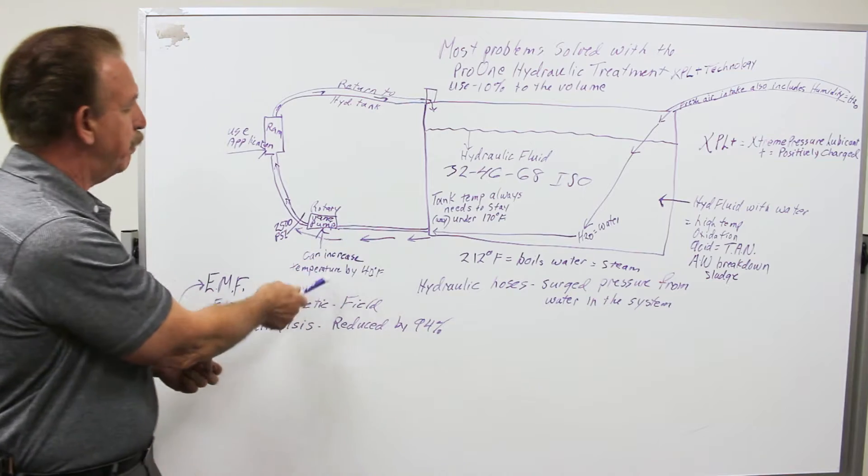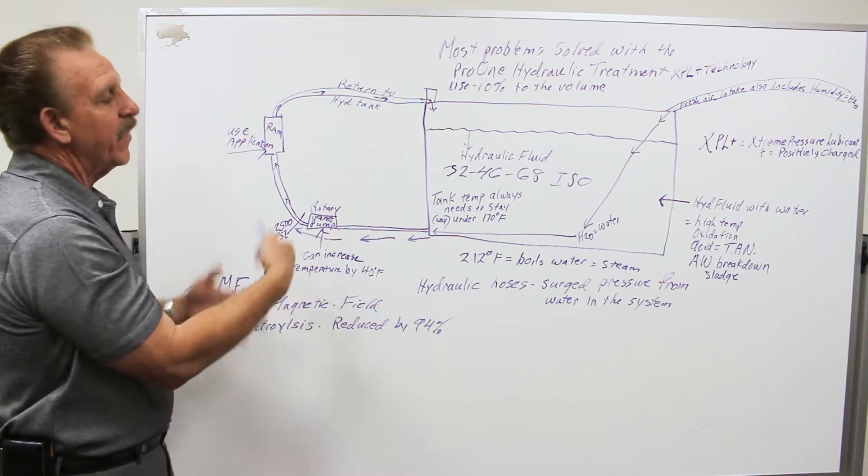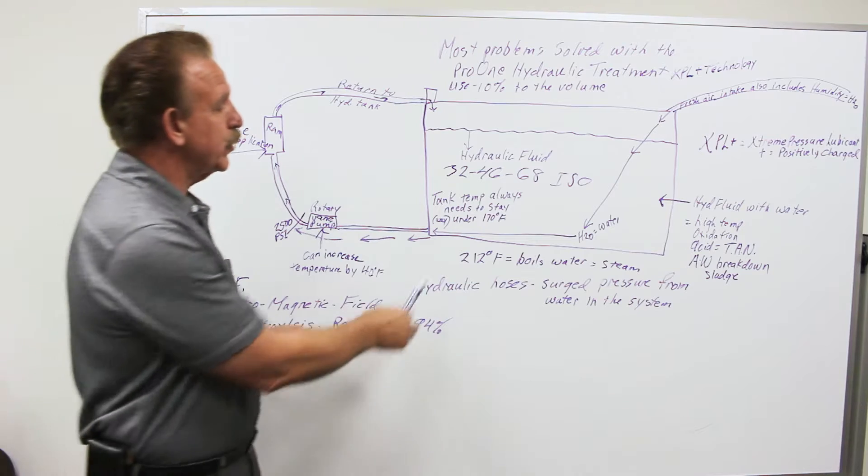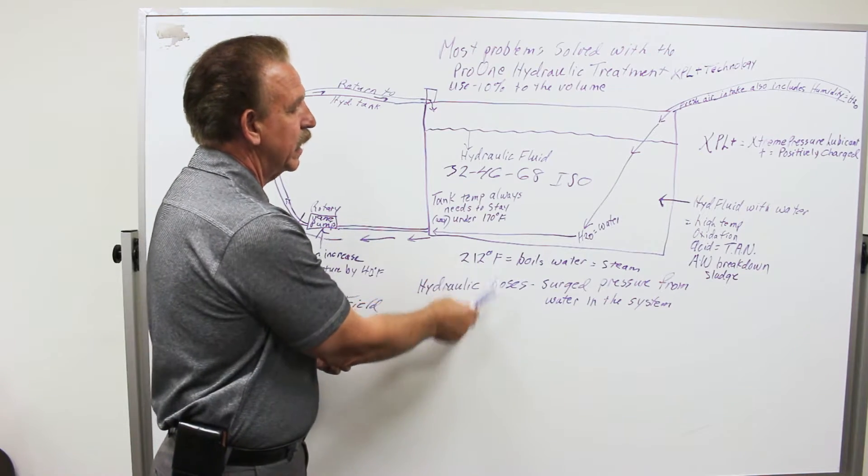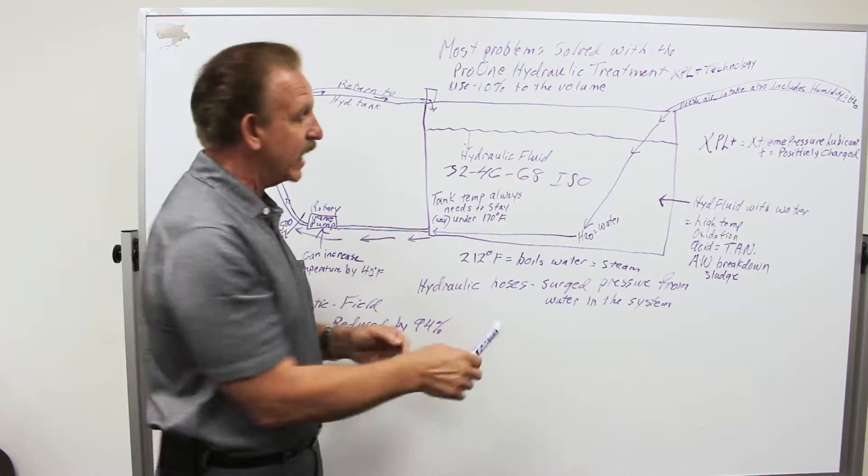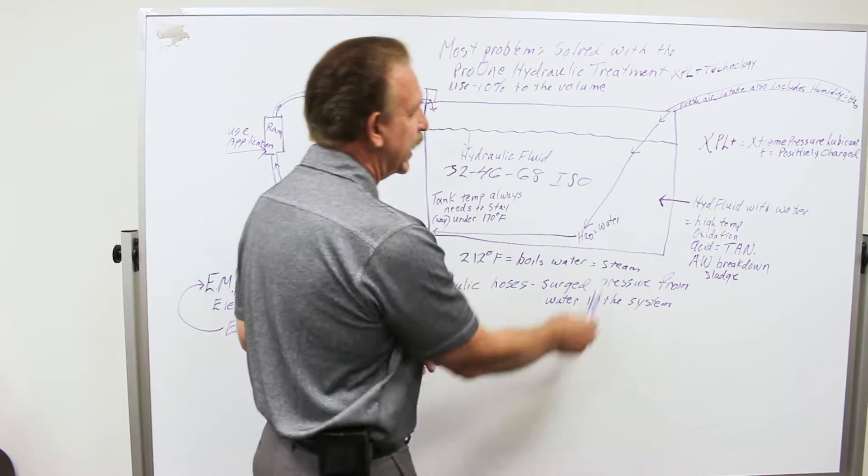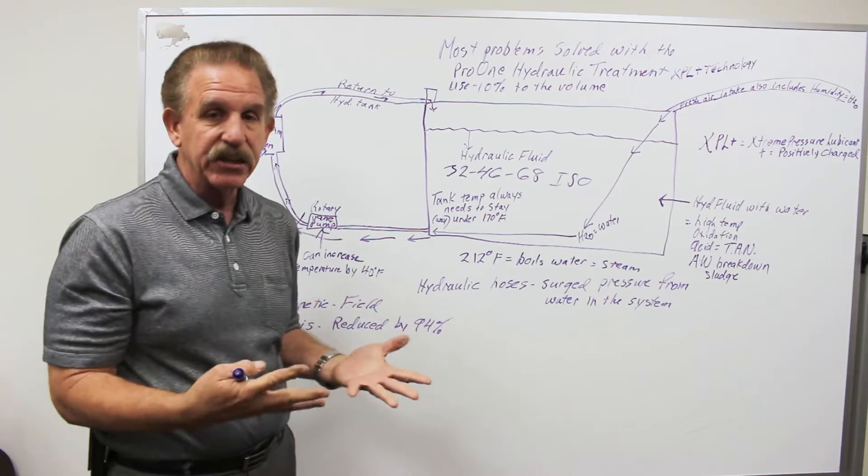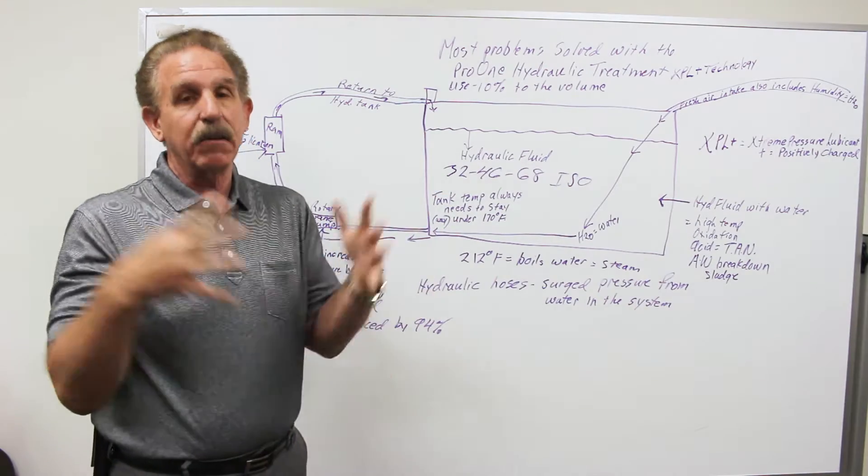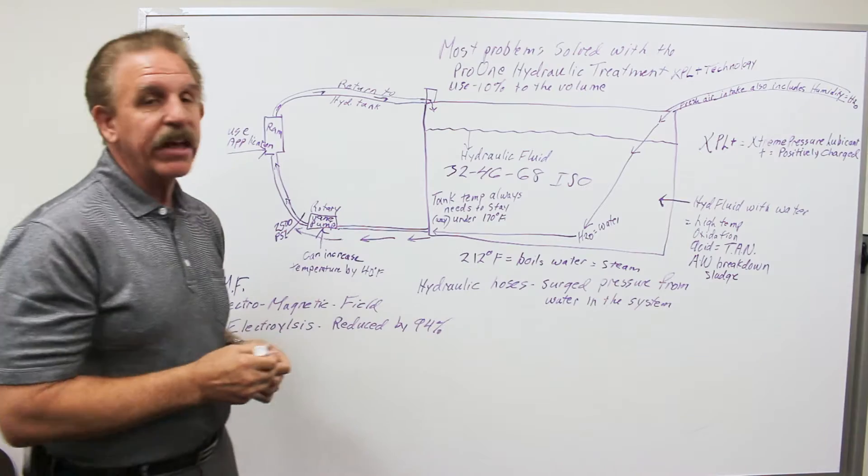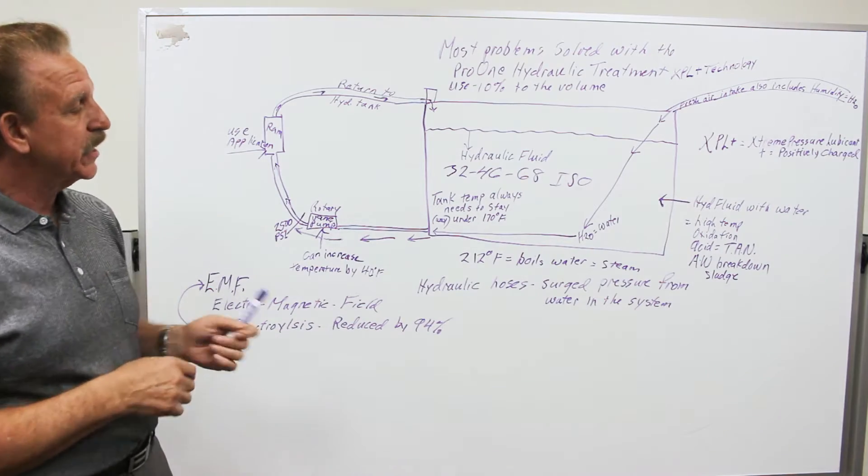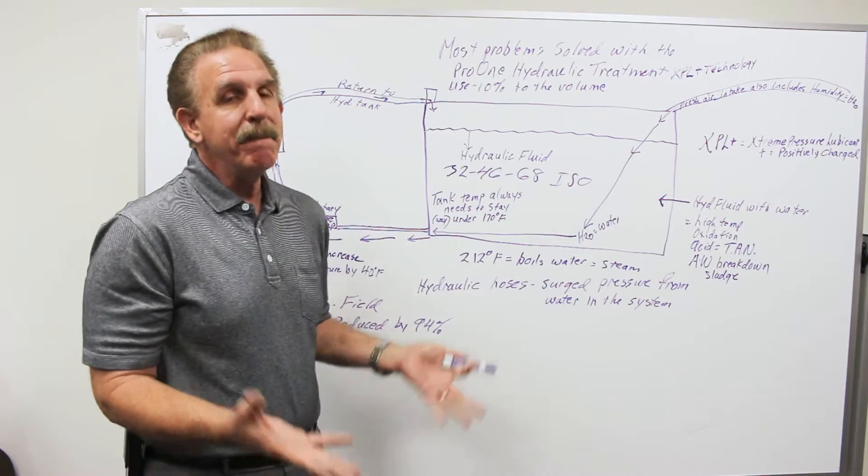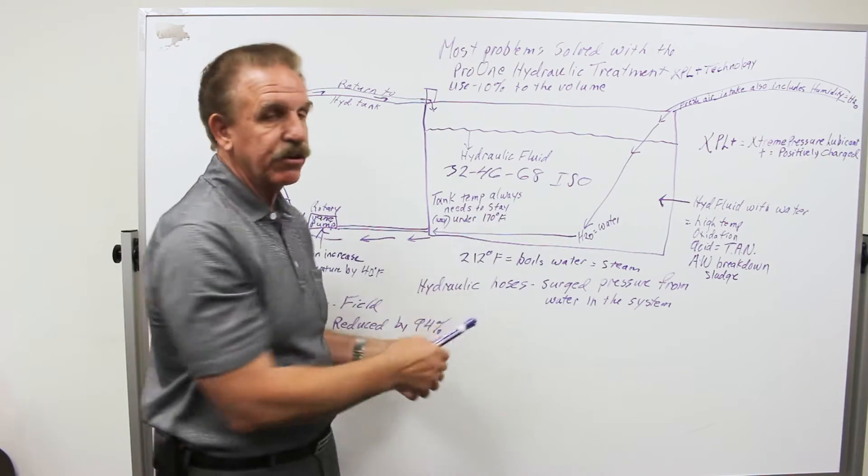At 170 it gets bumped by 40 here, that's pushing 210. That is too close to your 212 degrees Fahrenheit because that's what boils water into steam. You already know what happens with steam engines, steam boilers - it's under pressure. If you think you had problems with hoses at a lower temperature, it dramatically becomes a problem when you hit these higher temperatures.